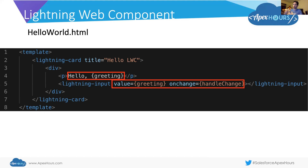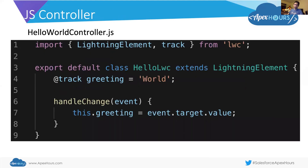Our onChange event is going to fire off a method we've called handleChange in the bind syntax. So we know we have a greeting variable and a handleChange method — let's look at them in our controller. Remember, I don't have to tell my Lightning Web Component what controller to use because it's all part of the same bundle. So my helloWorld.html references my helloWorld controller.js.